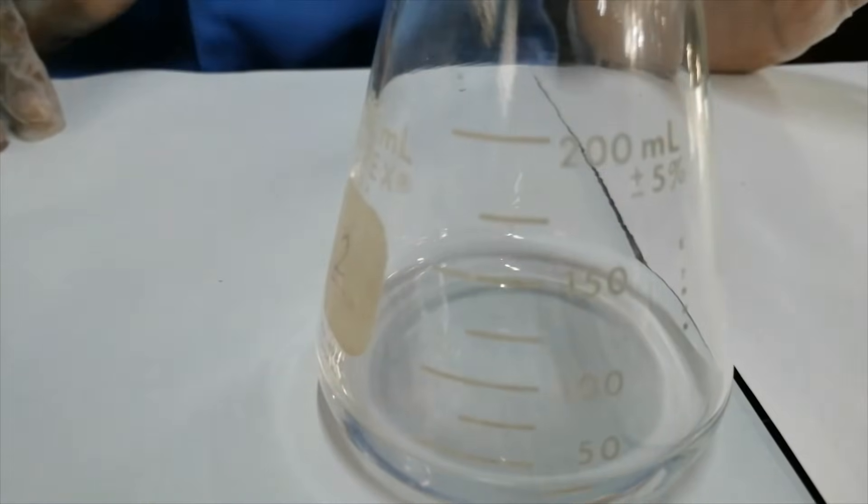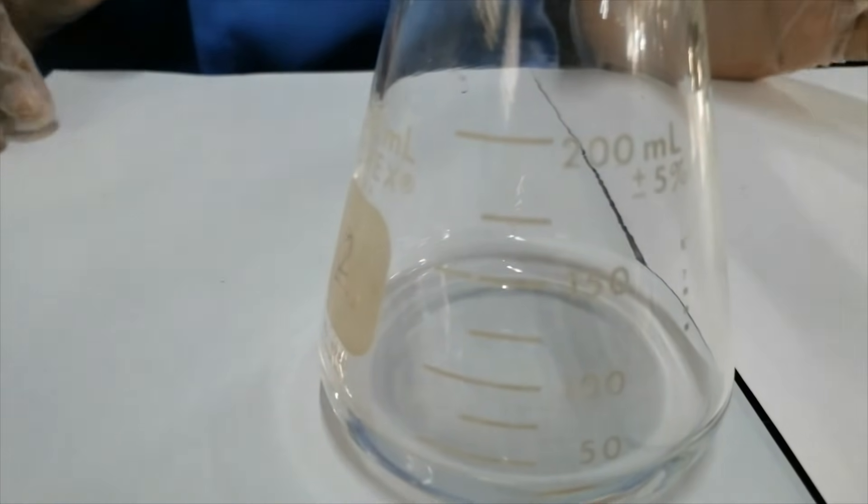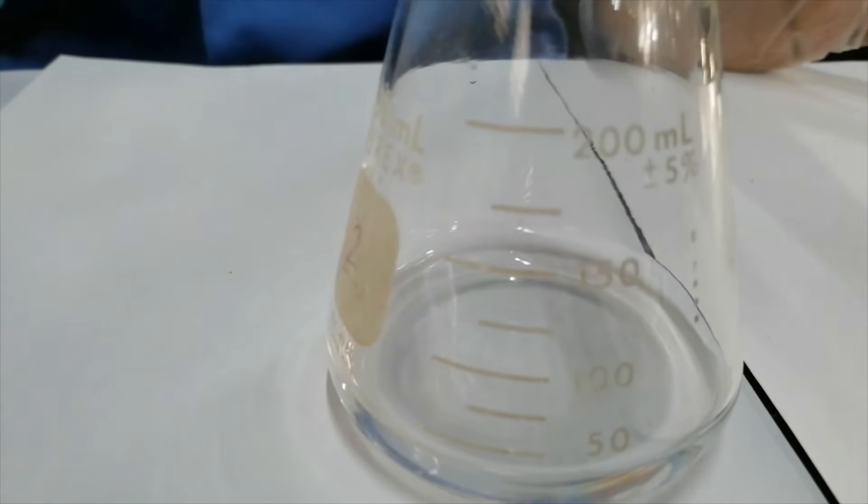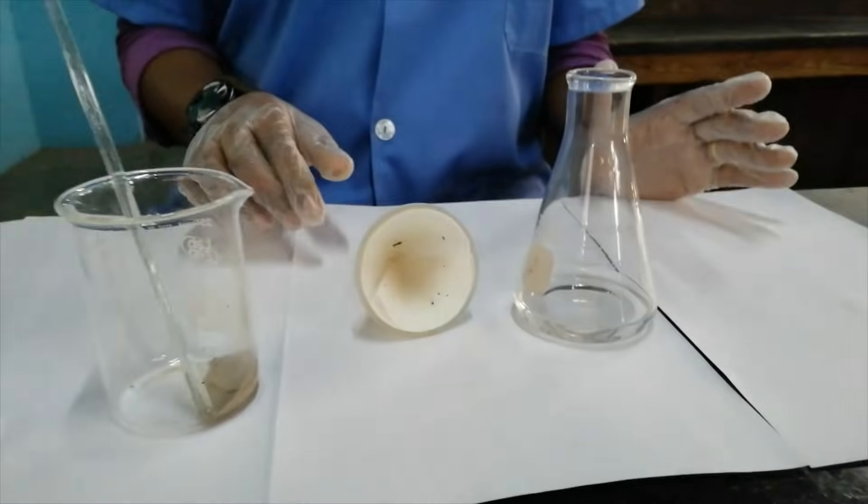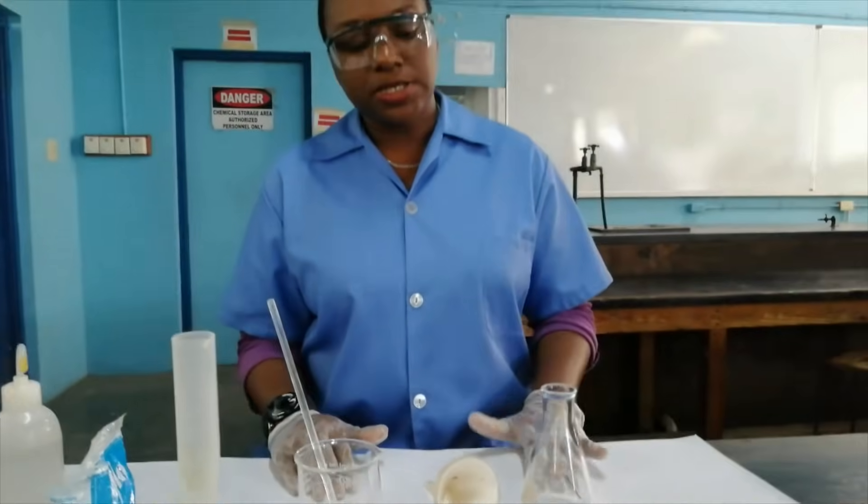If when you're carrying out this experiment in the lab it appears pale brown, then you just simply need to re-filter it. So this is the end of your experiment, and the other aspect to it now would be to evaporate this sodium chloride solution to recover the salt.